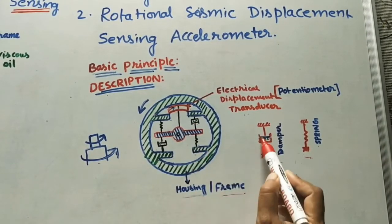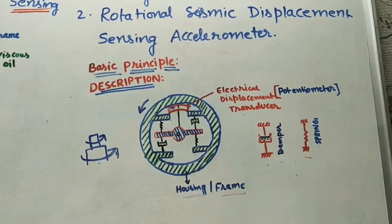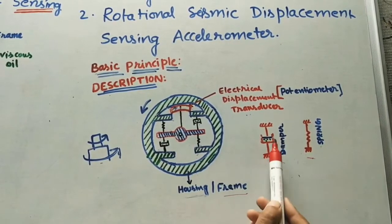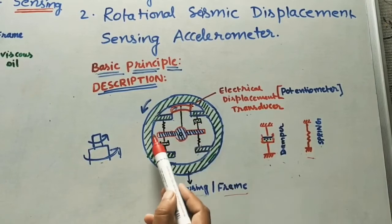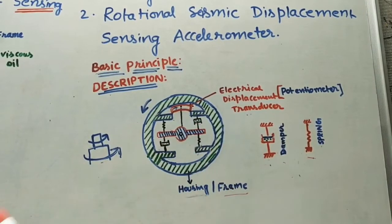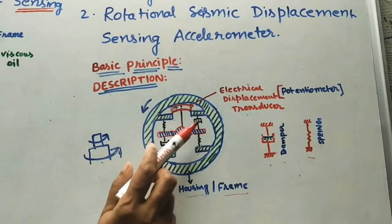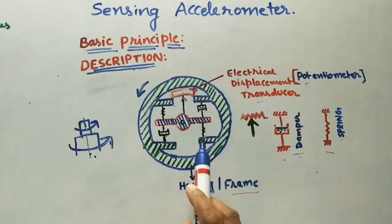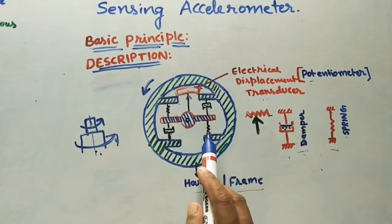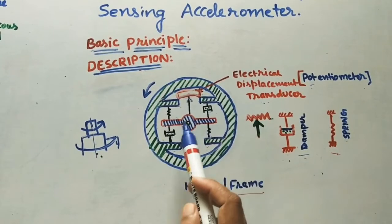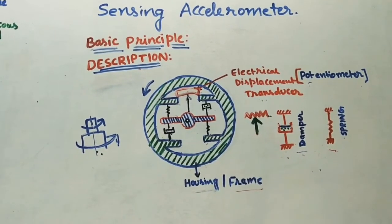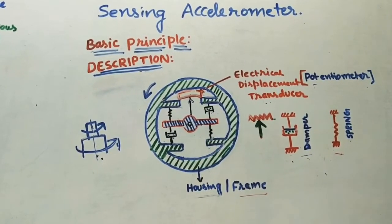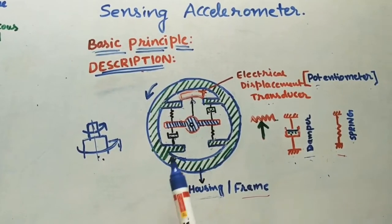The second part: this mass is connected to the frame through dampers. The damper has a cylinder and piston arrangement, and inside the damper there is some viscous oil which provides a cushioning effect for the mass. If there is no damper, this mass will unnecessarily vibrate with the spring. So the damper has two functions: removing the unnecessary vibrations of the mass, and giving the cushioning effect to the mass.